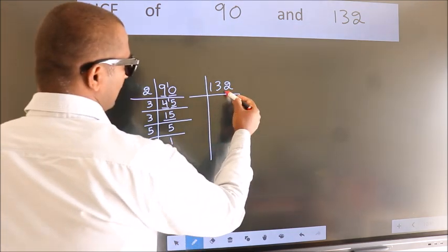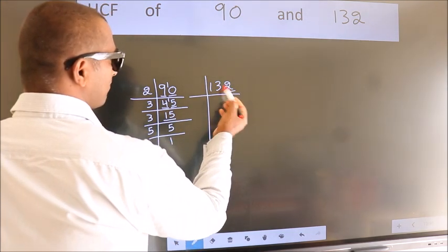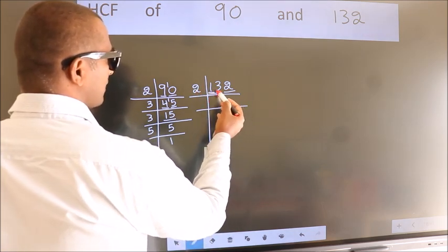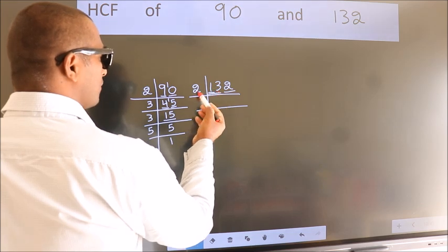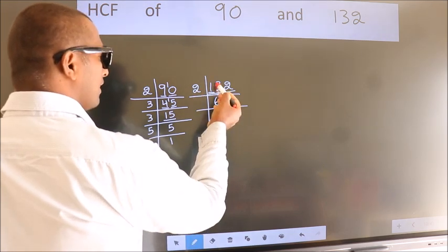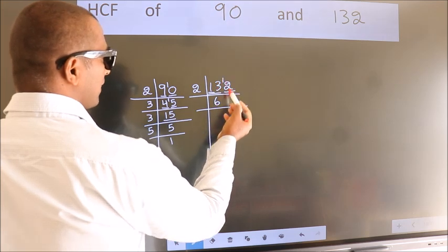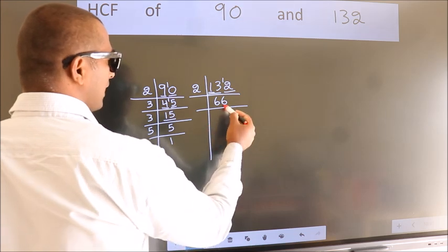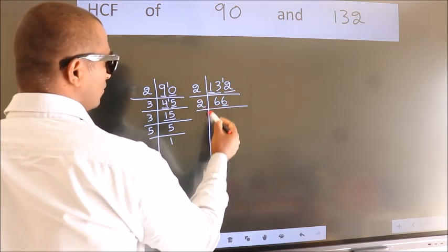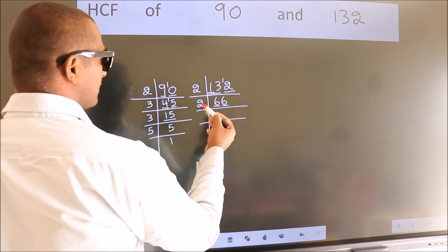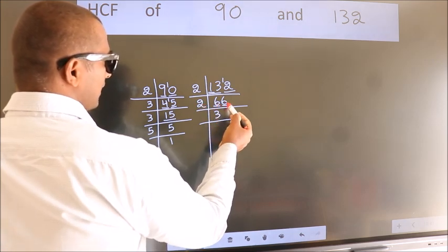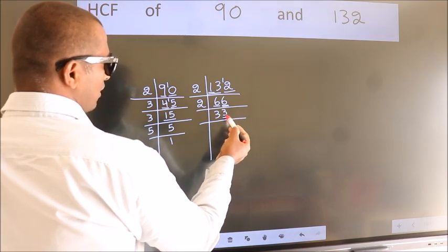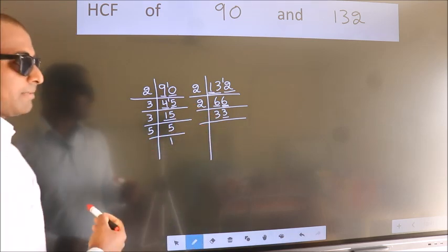Now for the other number, 132. Last digit 2 is even, so take 2. The first number is 1, smaller than 2, so we look at 13. A number close to 13 in the 2 times table is 2 sixes 12. 13 minus 12 is 1, carried forward to make 12. 2 sixes 12. Last digit 6 is even, so take 2 again. 2 threes 6. The other number is 6. 2 threes 6. Now last digit is 3, not even, so this number is not divisible by 2.